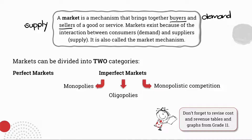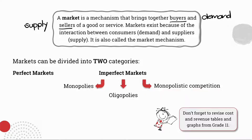Markets can be divided into two categories: perfect markets, which we will be discussing extensively, and imperfect markets, of which there are three kinds. Monopolies refer to a situation where you have one supplier of a particular good or service — for example, Eskom. Oligopolies refer to a situation when you have a few suppliers of goods and services — for example, the banking industry. And monopolistic competition is where you have many suppliers of the same good or service — for example, a lawyer or a hairdresser.